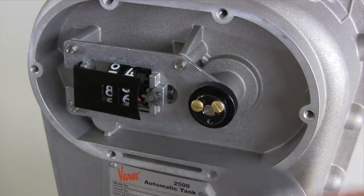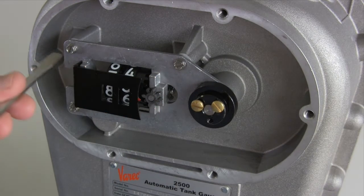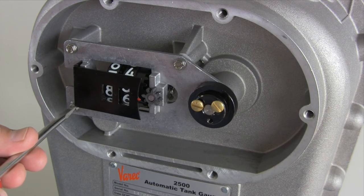To adjust the alignment, remove the dial gear. Loosen the three counter assembly mounting screws just enough to let it slide from side to side. Then slide the assembly to the left.